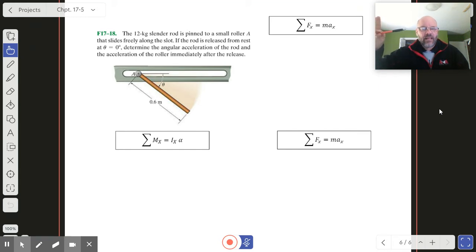So it's like right here and they're letting it drop down. Determine the angular acceleration of the rod and the acceleration of the roller immediately after their release. As this thing drops, the position of the roller pin A is probably going to get drawn this way a little bit. We need to find that acceleration.